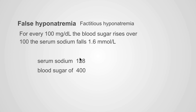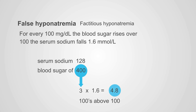One interesting thing about factitious hyponatremia due to hyperglycemia is that the degree of hyponatremia is predictable. For every 100 mg/dL that the blood sugar is above 100, you add 1.6 to the measured sodium. For example, a patient with sodium of 128 and blood sugar of 400: there are three 100s above 100, so 3 × 1.6 = 4.8, and 4.8 + 128 = 133. That's called the adjusted sodium. Some prefer to use 2.4 instead of 1.6, though 1.6 may be more accurate.